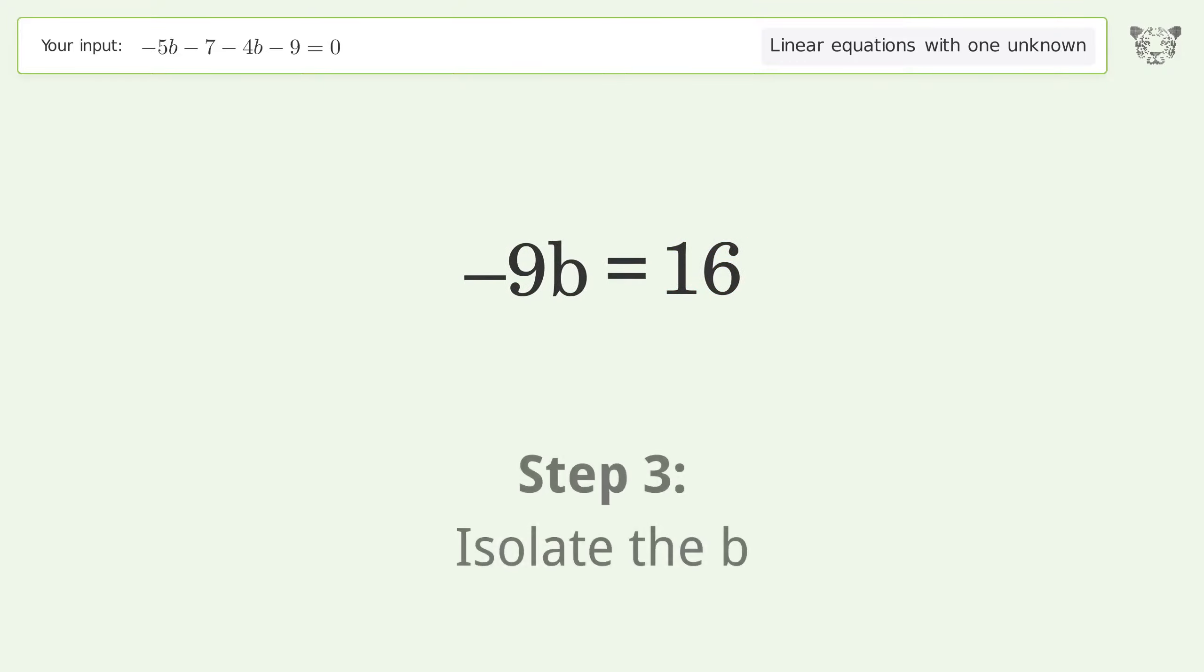You asked Tiger to solve this. It deals with linear equations with one unknown. The final result is b equals negative 16 over 9.